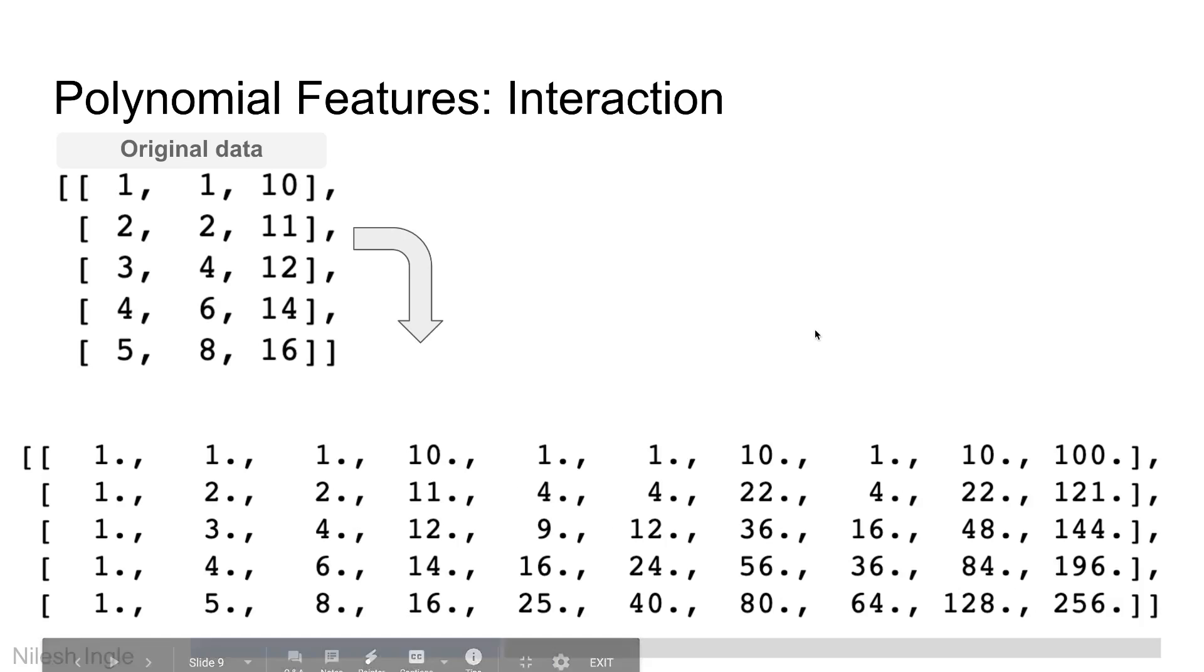In the output array we have these original feature columns: fertilizer, yield, and water. Before that there is a column that has just ones in there, and then after that there are these extra six columns.